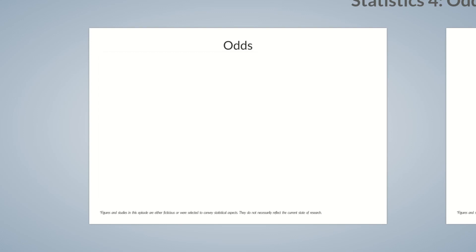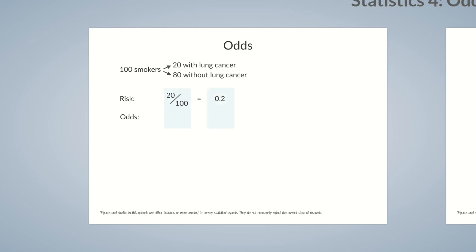Let's go back to our fictional study on lung cancer and take a look at the group of smokers. Of the 100 smokers, 20 developed lung cancer, whereas the remaining 80 smokers didn't. The risk of smokers developing lung cancer is calculated as the proportion of 20 smokers with lung cancer from the total number of 100 smokers — that is, 20 divided by 100, which is 0.2. The odds of smokers developing lung cancer is calculated by dividing 20 smokers with lung cancer by 80 smokers without lung cancer. So, 20 divided by 80 is 0.25.